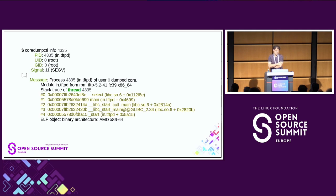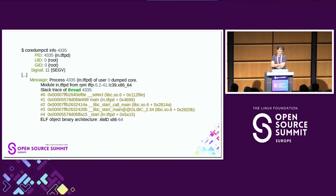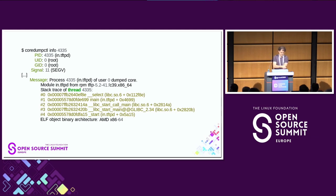Here is an example of coredumpctl info after purposely making the TFTP daemon crash. You can see that this was a build with mini-debuginfo, so the call stack is symbolicated — you can see the main function inside the TFTP daemon. If you did not have debug symbols, you would only see the addresses of those functions.